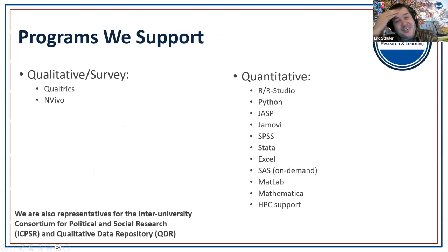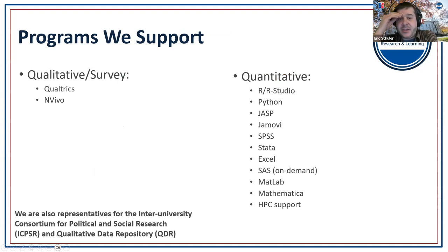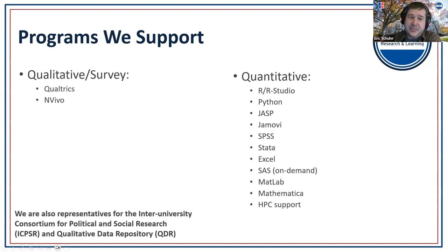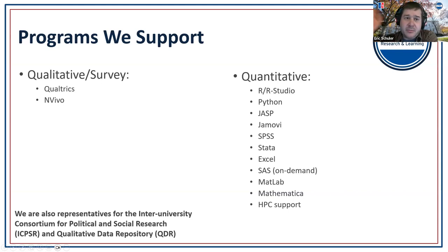We have a long list of quantitative software — some disciplines use different ones. Primarily we do R, RStudio, Python, JASP, and Jamovi. Jamovi and JASP are both open source, almost like SPSS but with an R backbone, so completely free. I'm a big proponent of open data, open coding, and open source programs. I prefer R and RStudio.